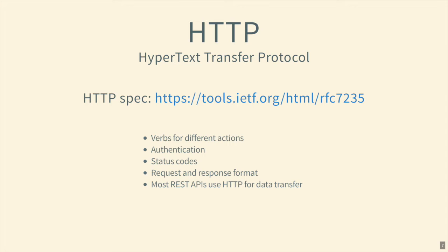HTTP is the most common protocol used for web APIs. In a very short synopsis: it defines a number of verbs for different actions. Get is the most common — when you open your browser and go to a website you're performing a GET request. HTTP also defines authentication, status codes (200 means success), how to make a request to an HTTP server, and how to give a response back.